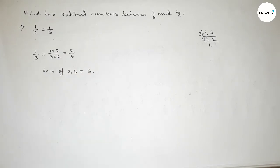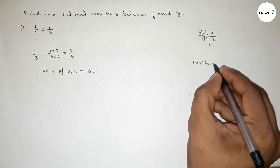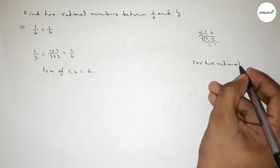So this is 2 over 6. Okay, now for finding two rational numbers between any two numbers we have to follow this important method.